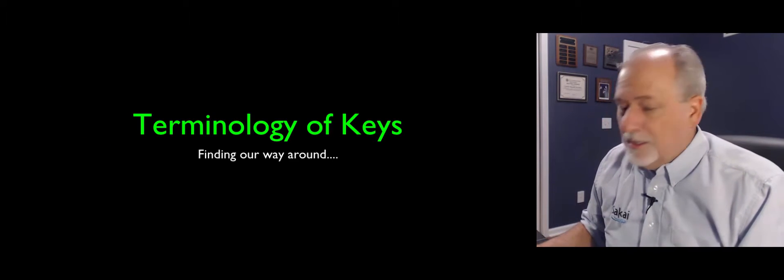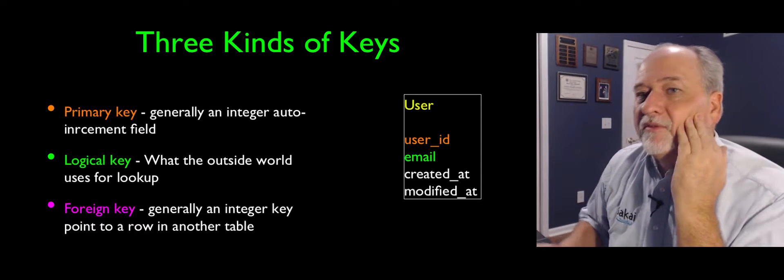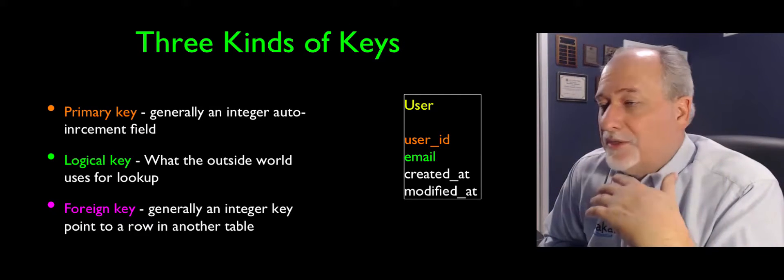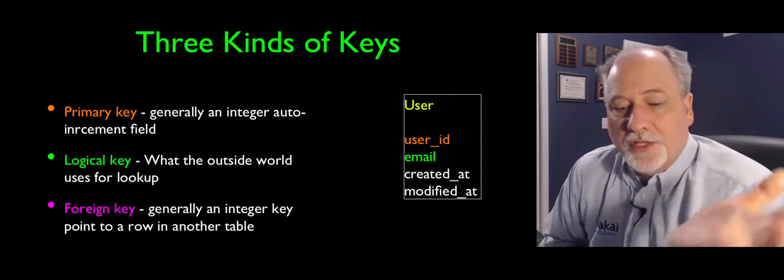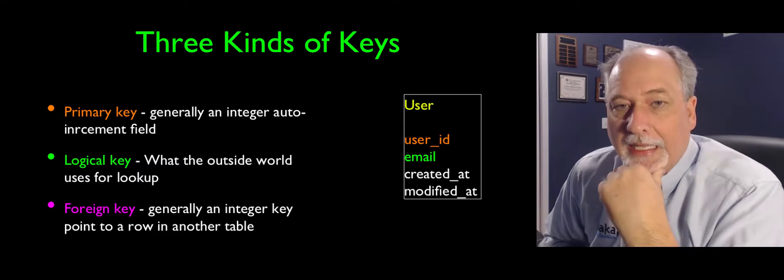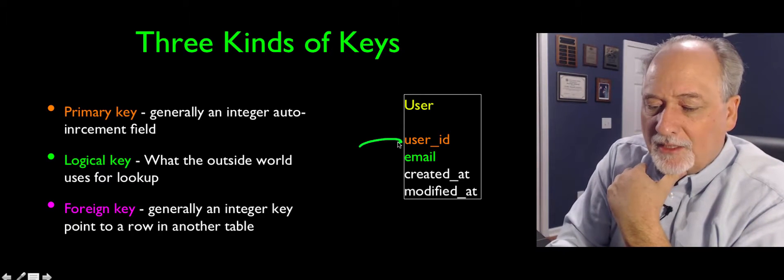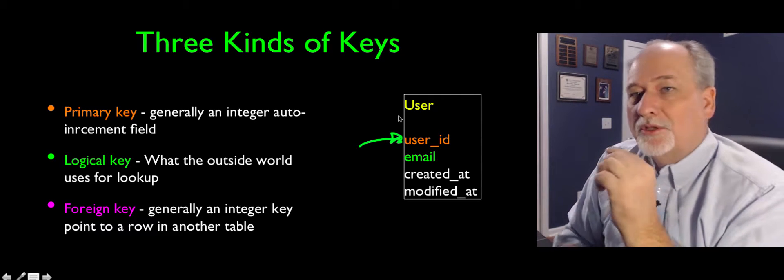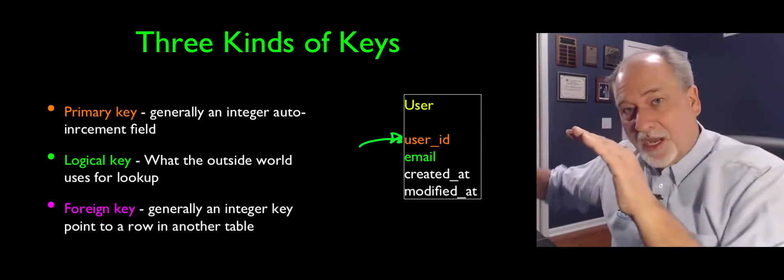Now, I'm calling these things keys. And it turns out that we have some terminology about keys, and you just have to learn this. There are three general kinds of keys that we deal with. The first kind of key is what's called a primary key. And that's the key we add to the table to generate this little number. So we call that the primary key of the entire row.